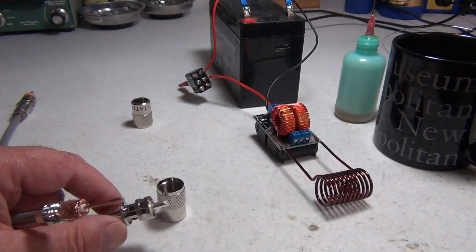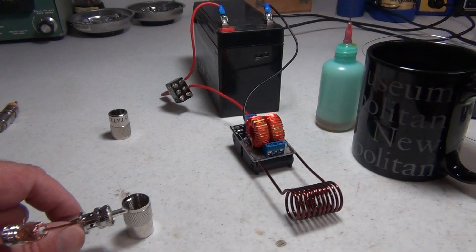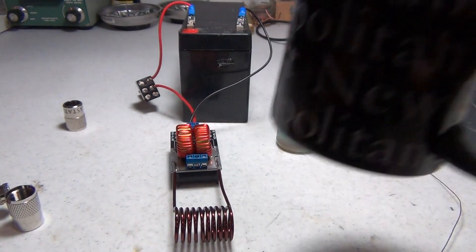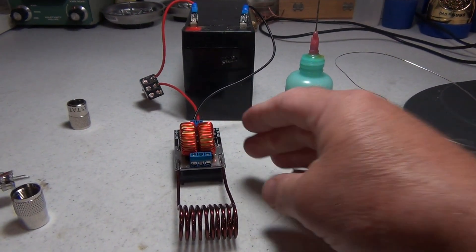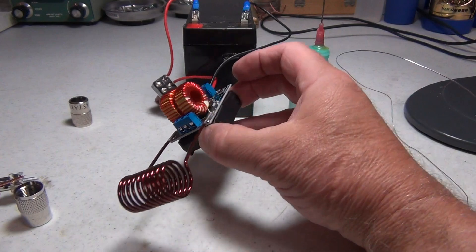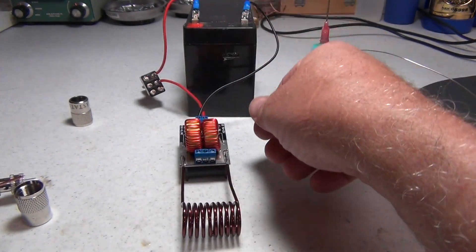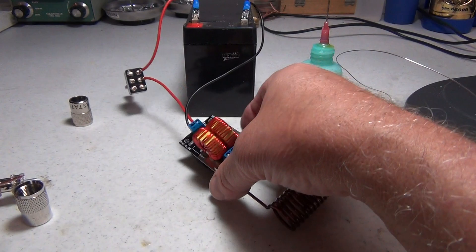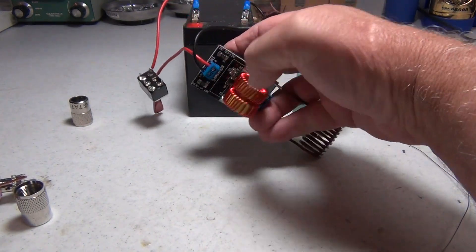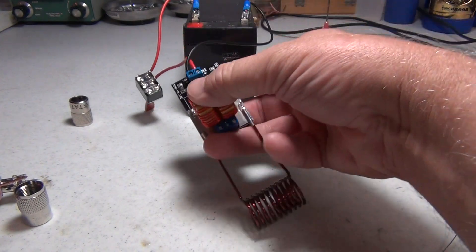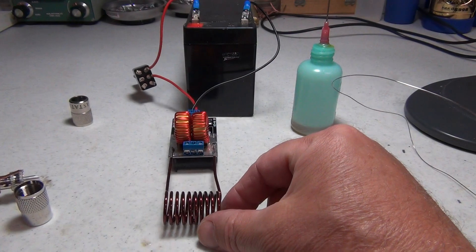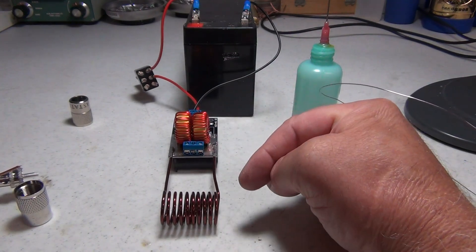The way I'm going to do this is with an inductive heater I found on Banggood. Essentially you have a high frequency oscillator with a couple of MOSFETs on the side here—you can see them under the coils.